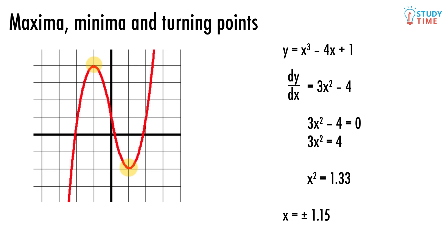So the maximum to the left is obviously at x equals negative 1.15, and the minimum to the right is at x equals 1.15.